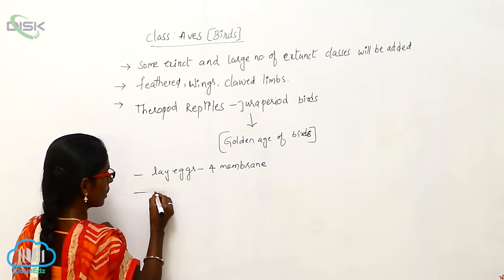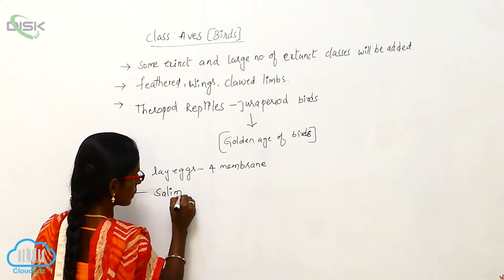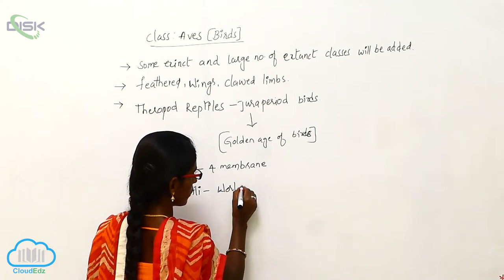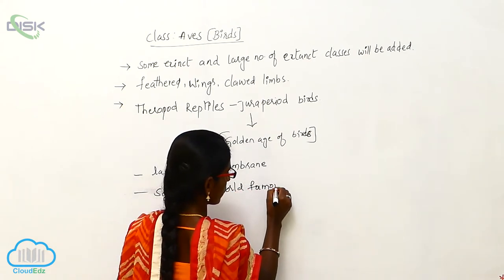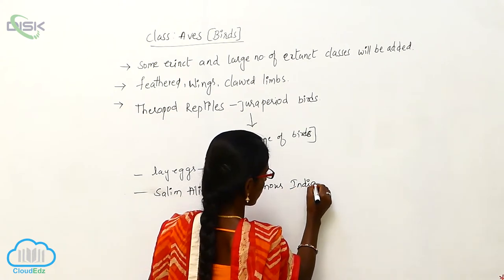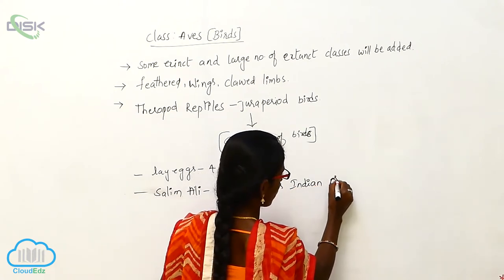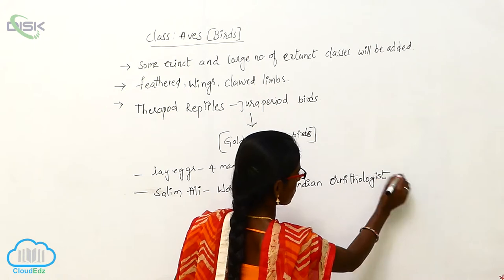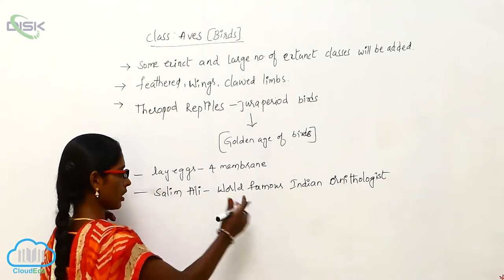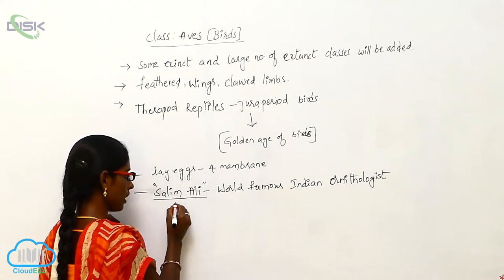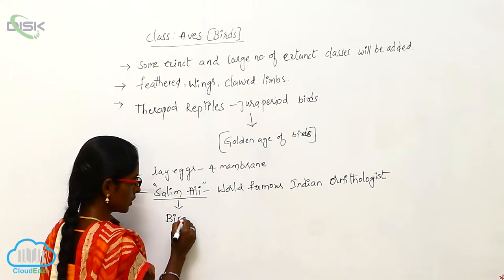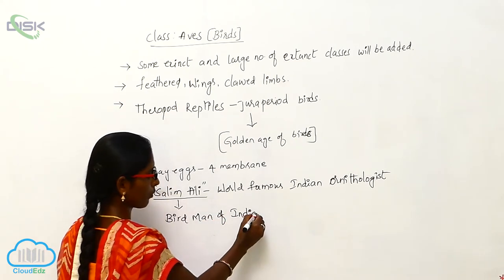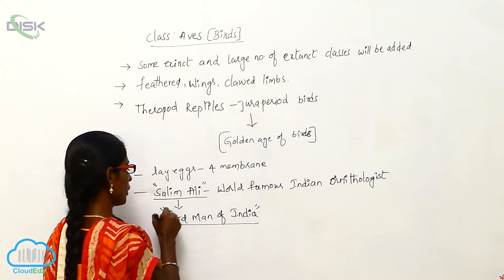Salim Ali is a world famous Indian ornithologist, also called the Bird Man of India.